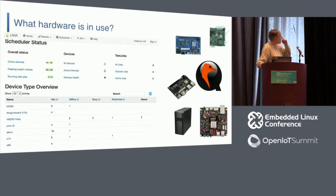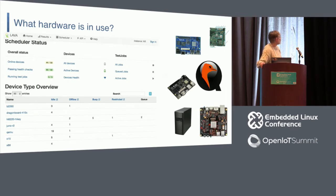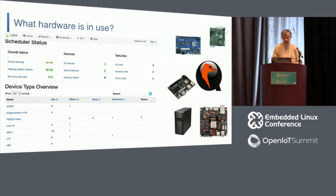This activity shows up in the LKFT dashboard. It's a bit of an eye chart, but down at the bottom is a list of boards that data is getting kicked off of — this is a screenshot from an active day in February. We've got B2260 boards from ST, DragonBoard 410C from Qualcomm, the HiKey board which is a HiSilicon device, a Juno R2 dev board from ARM, QEMU for x86 with ARM32 and ARM64 coming as well, X15 which is a 32-bit ARM device from TI, and standard x86 devices.